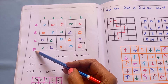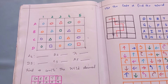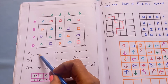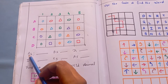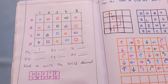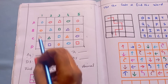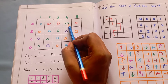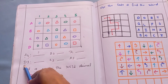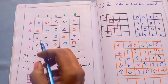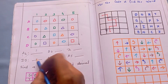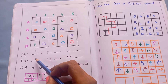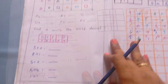The next part involves decoding a grid. You can decode and draw the shape. For example, A4 refers to row A in the fourth column — it is a green color oval. D3 refers to the third column in row D. Kids use the row and column coordinates to decode and draw the correct shape.